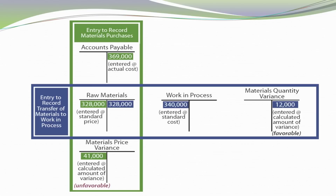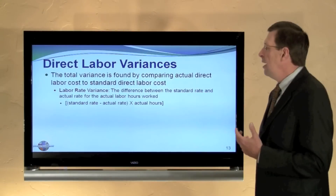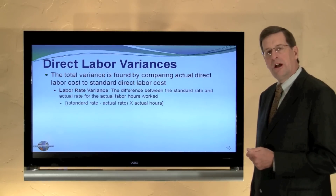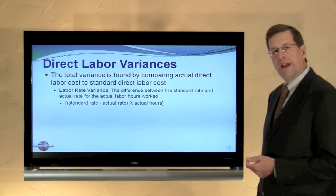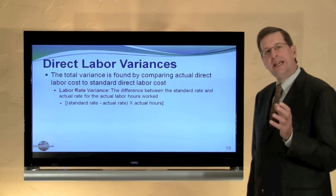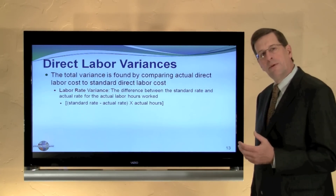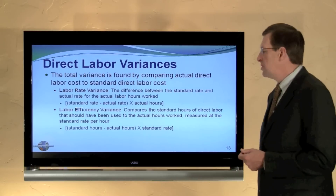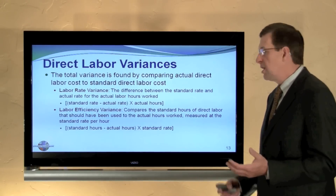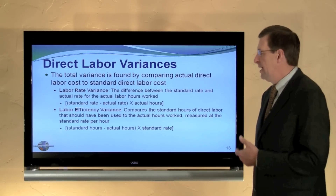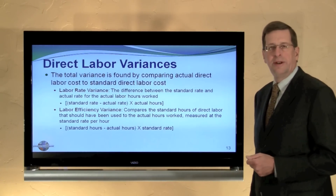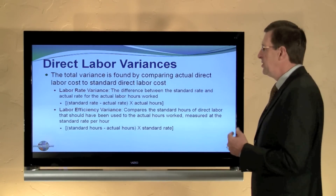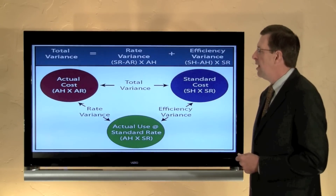Direct labor has a very similar model. The total variance is found by comparing actual labor cost to standard direct labor cost. We break this down to a labor rate variance, which compares the standard rate for labor to the actual rate, multiplied by the actual hours worked. The labor efficiency variance looks at the standard hours that should have been used compared to the actual hours, times the standard rate. Once you've conquered the materials variance formulas and calculations, you've fairly well conquered the labor calculations as well.